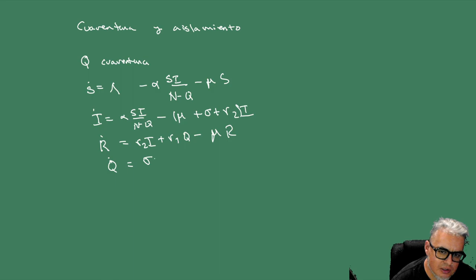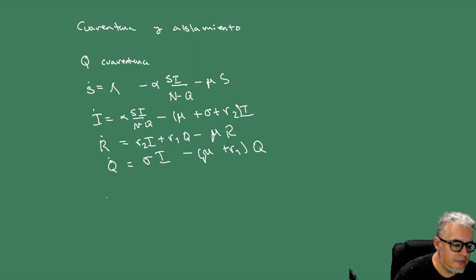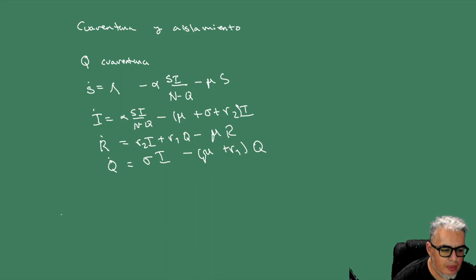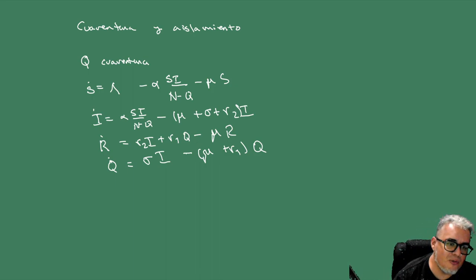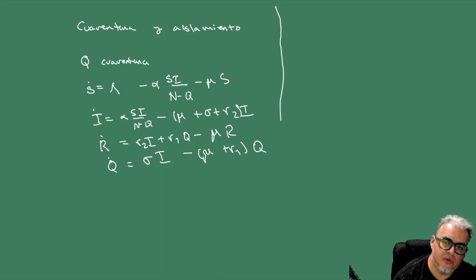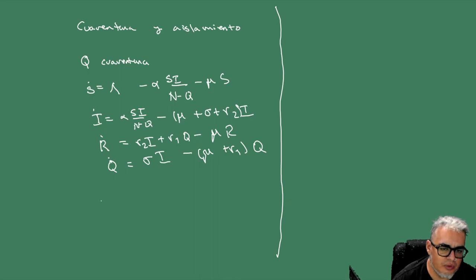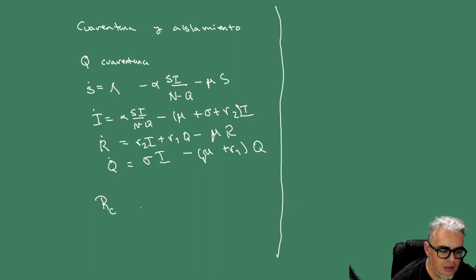Y Q punto son los que se aíslan estando enfermos, menos los que mueren, y los que pasan a ser removidos. Como en el caso de la vacuna, aquí vamos a poder construir un número reproductivo asociado a este modelo con Q, y vamos a llamarlo RC, que es el número reproductivo controlado. Esto es alfa sobre...